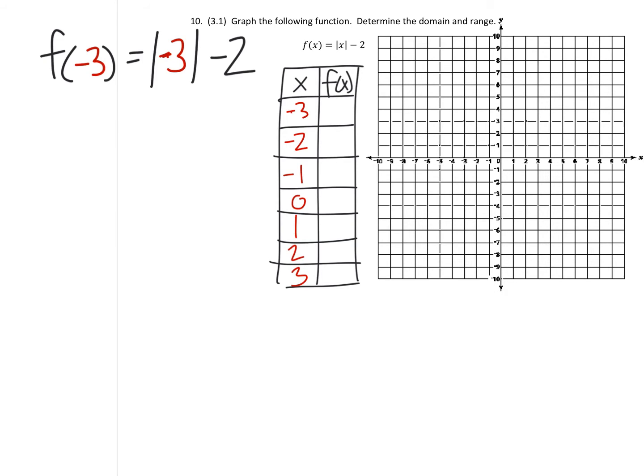For example, we've replaced negative 3 in where the x's were. And right here, this would give us f of negative 3 equals 3 minus 2. The absolute value of negative 3 right here is positive 3. Then I'll just solve 3 minus 2, and we find f of negative 3 is a positive 1. So I can write that into the table.